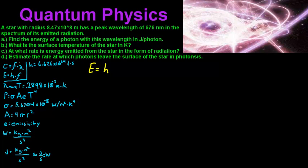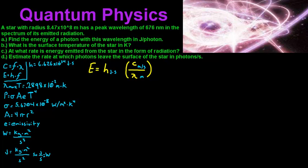So frequency must equal C divided by our wavelength. H is in joules per second, and we've got C divided by our wavelength. C is in meters per second and our wavelength is in meters. When we do that, the seconds cancel out, the meters cancel out, and all you're left with is joules per photon.